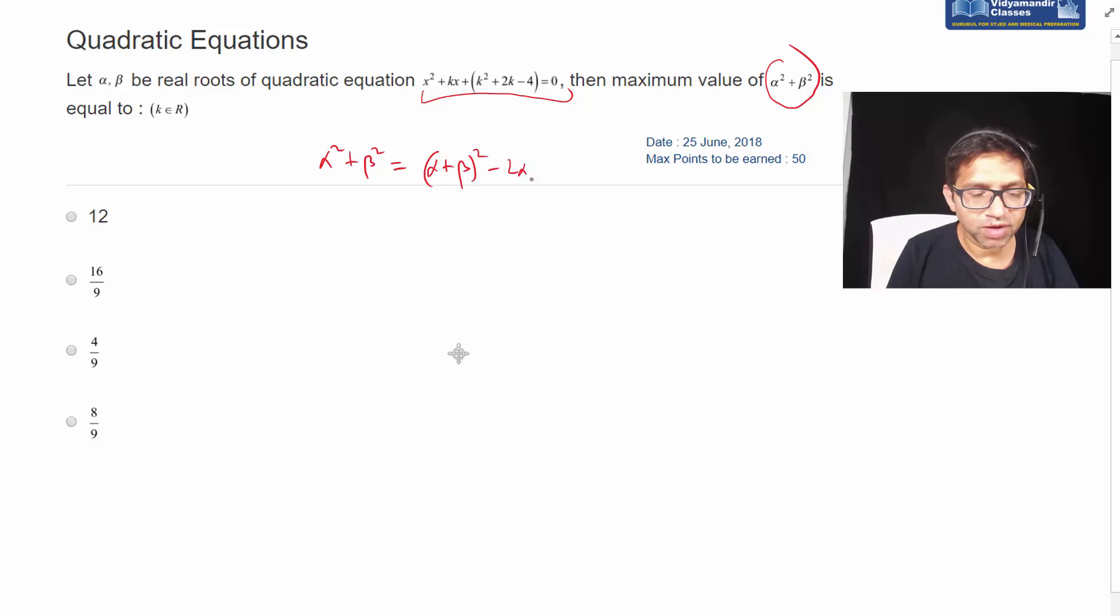alpha plus beta whole square minus 2 times alpha beta. And alpha plus beta, the sum of the roots, is minus k squared, and the product of the roots is k square plus 2k minus 4 from this quadratic. That's the constant divided by coefficient of x square.